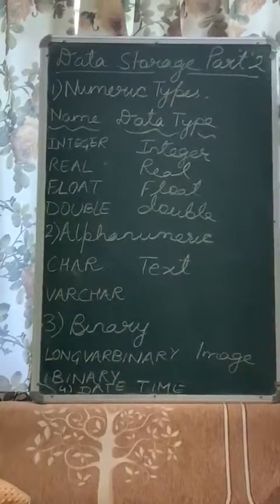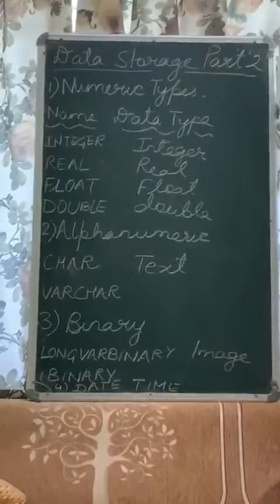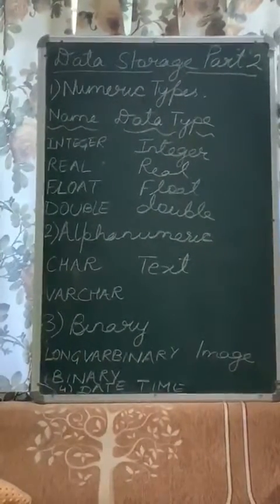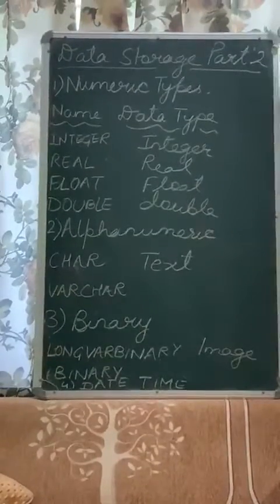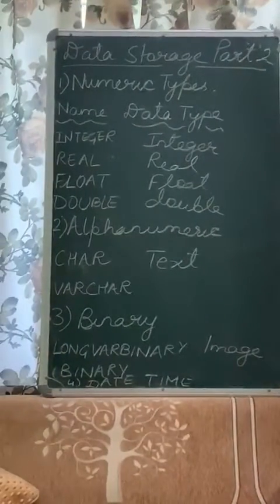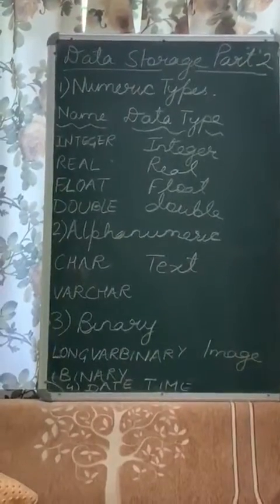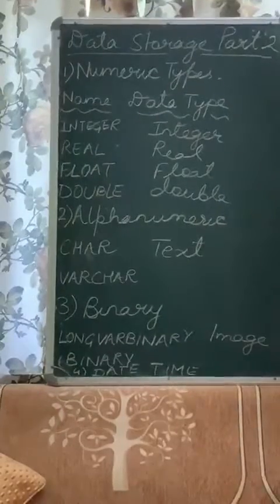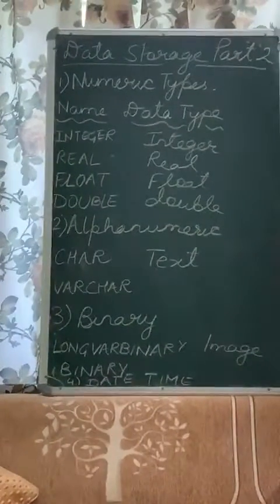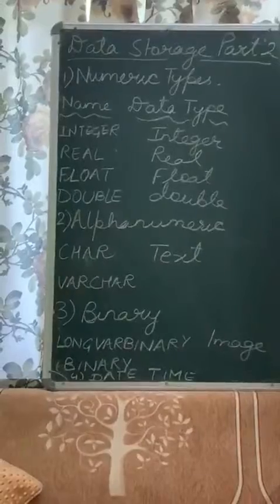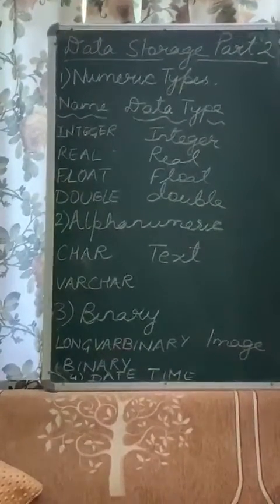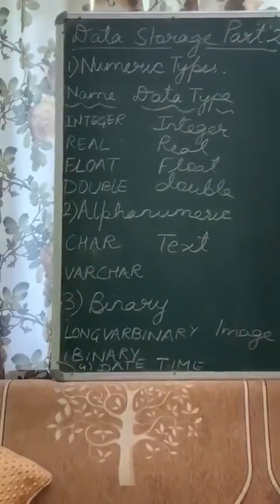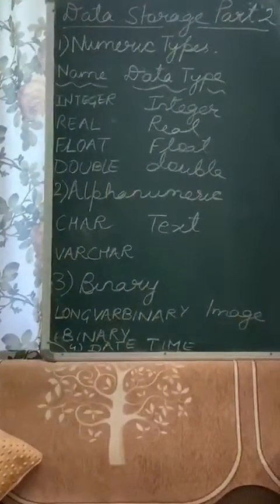The difference between CHAR and VARCHAR: CHAR data type is used to store only character values, while VARCHAR, spelled V-A-R-C-H-A-R, is used to store both character and number values. VARCHAR is used when entering an address in the database, or date of birth written as '25th May 2007', which is a combination of numbers and alphabets.